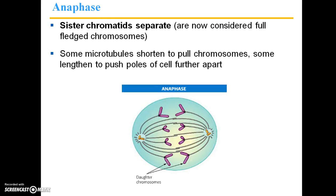During anaphase, the sister chromatids separate, and as soon as those chromatids are separated from one another, they are now once again considered full-fledged chromosomes. Some microtubules shorten to pull chromosomes, and some lengthen to push the poles of the cell further apart.